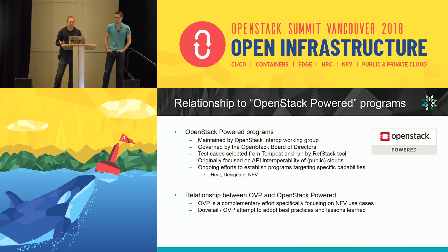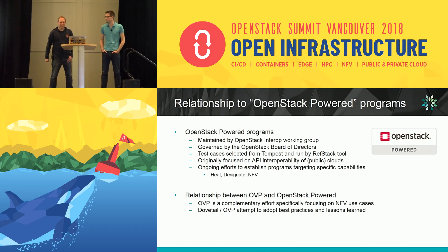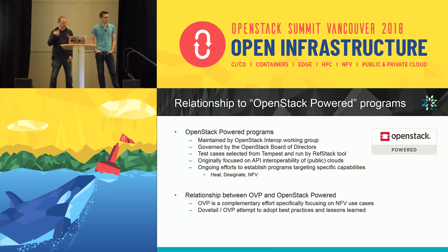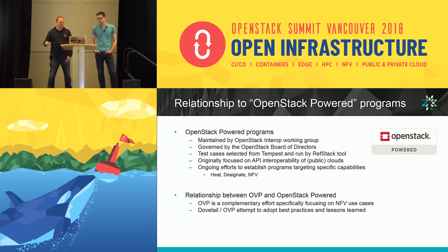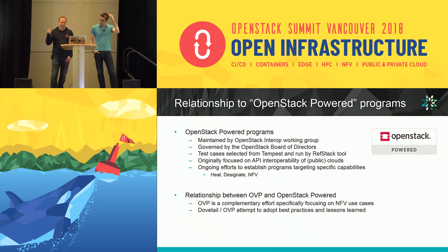There is a relationship to the OpenStack Powered programs that already exist in OpenStack. The OpenStack Powered programs are maintained by the OpenStack Interop Working Group under the governance of the board of directors. They run selected test cases from Tempest and have a tool called RefStack, which has a similar relationship to Tempest as the Dovetail tool has to the other test projects in OPNFV. The focus is on API interoperability — the idea being that applications developed to run on OpenStack-powered public cloud should run on any public cloud.